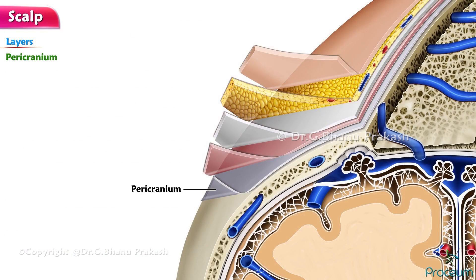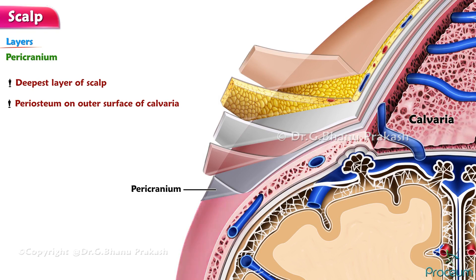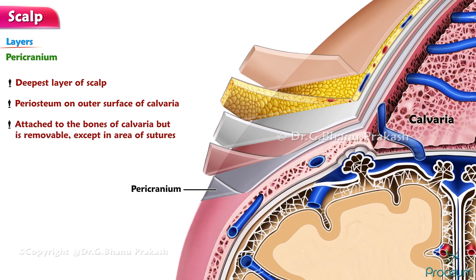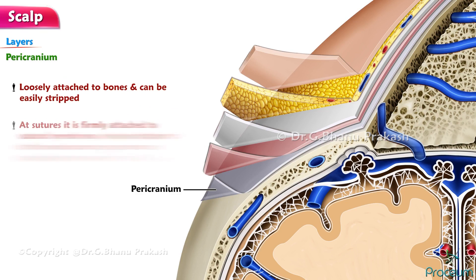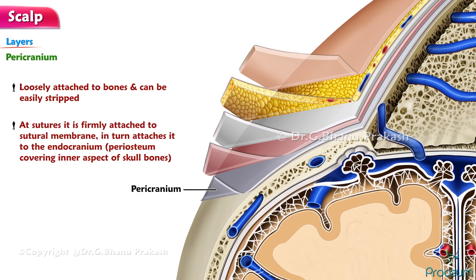Pericranium. The pericranium is the deepest layer of the scalp and is the periosteum on the outer surface of the calvaria. It is attached to the bones of the calvaria but is removable except in the area of the sutures. It is loosely attached to the bones and can be easily stripped, but at sutures it is firmly attached to the sutural membrane, which in turn attaches it to the endocranium — the periosteum covering the inner aspect of the skull bones.